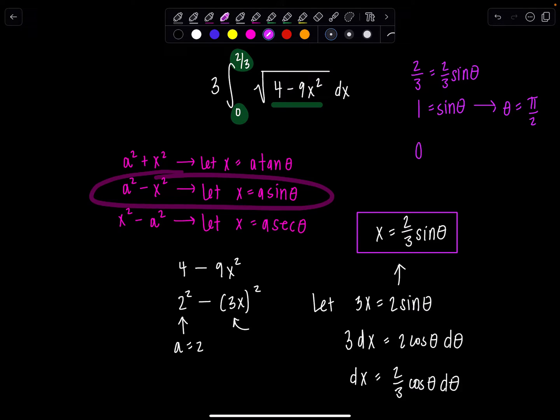And then the lower limit of 0 equals 2/3 sine theta. That would mean 0 is sine theta. When does that happen? Yes, when theta is 0. So those are my new limits of integration, 0 and π/2.